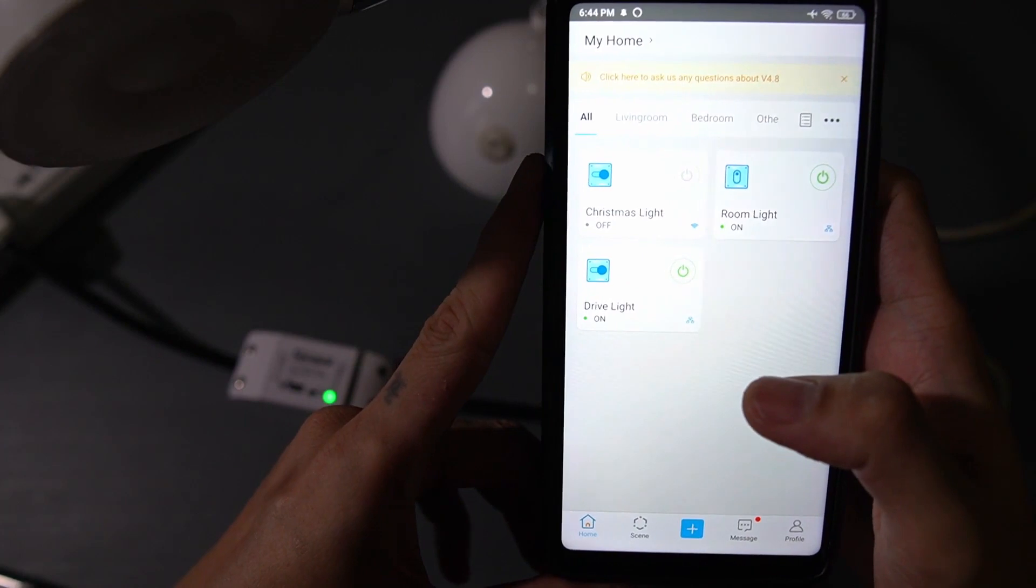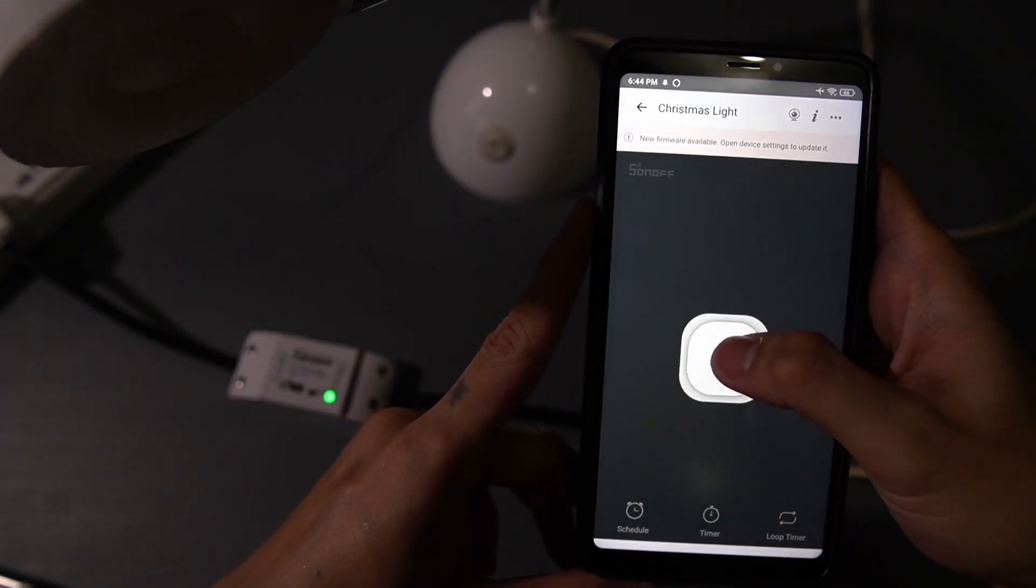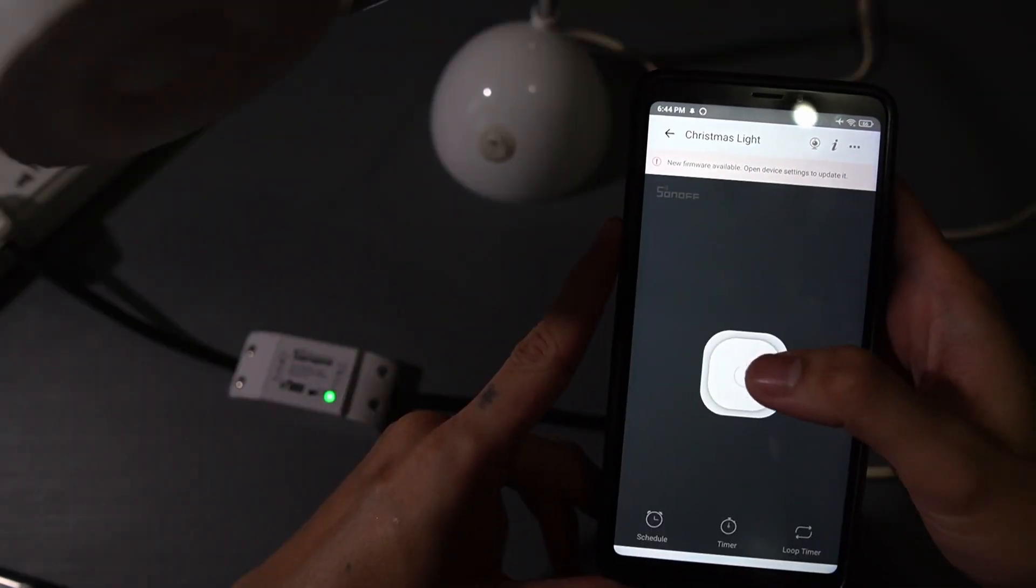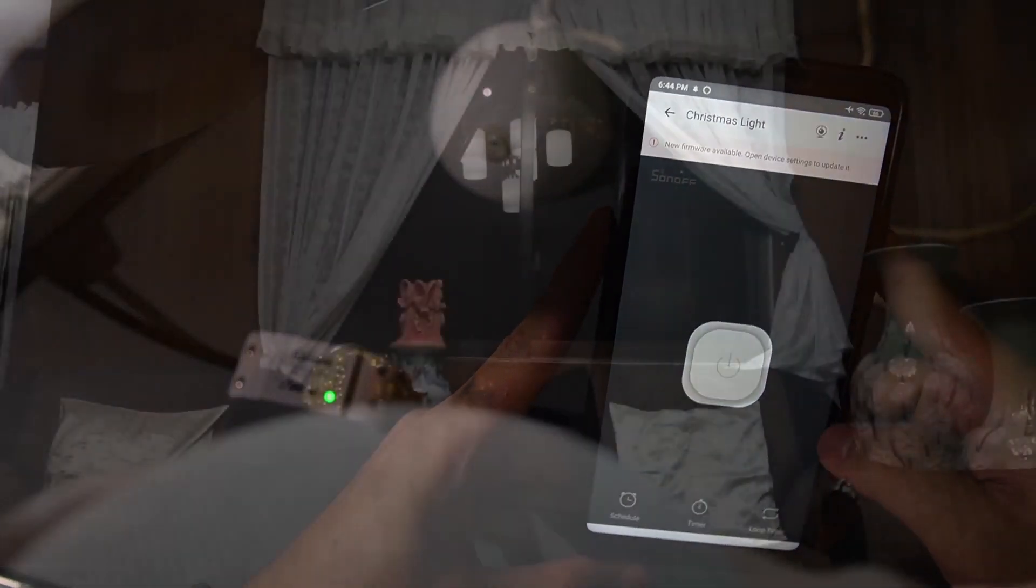Since I have both Alexa and Google Home already configured for the eWeLink app, both Home Assistants automatically detected my device. Here's how it works with Google Home. Hey Google, turn on Christmas lights. Got it, turning Christmas light on. Hey Google, turn off Christmas lights. Okay, turning off Christmas light.